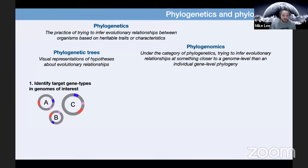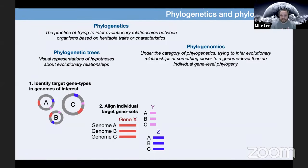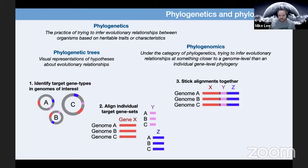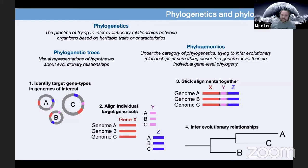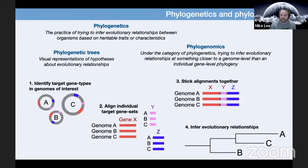The most common current way to generate a phylogenomic tree works as follows. Similar to before, we first identify the genes we want in all of the genomes we're considering — here maybe genomes A, B, and C, looking for three different colored genes. We then align these individual target genes together, separately, and then stick all of them together, making a long concatenated sequence representing each genome. Then we try to infer evolutionary relationships using an evolutionary model, which can be applied across the whole concatenated sequence or specifically for each individual gene.